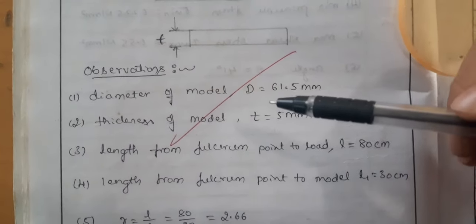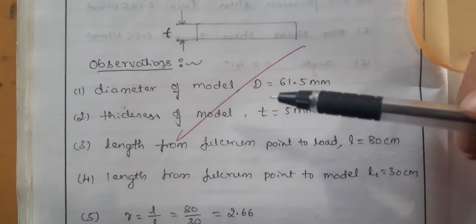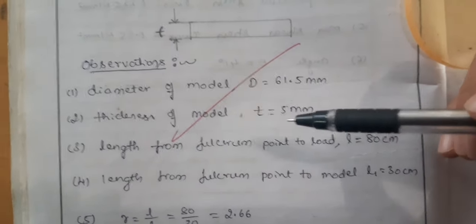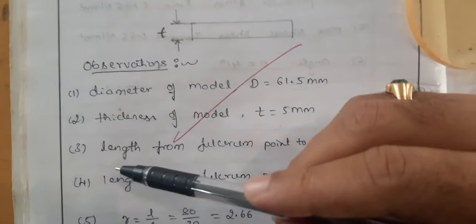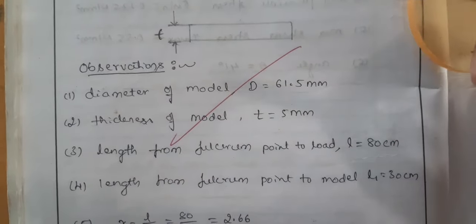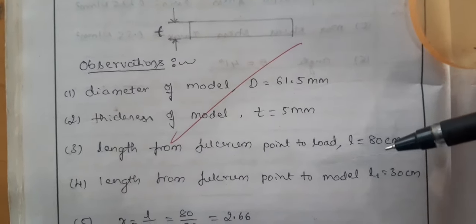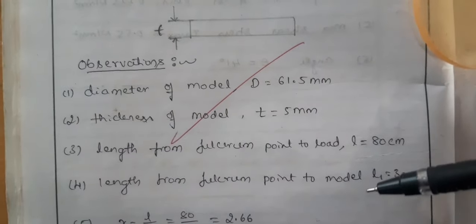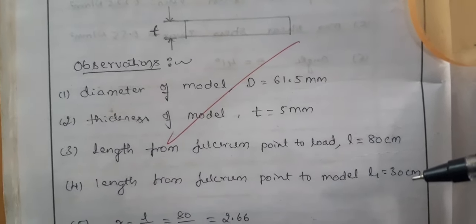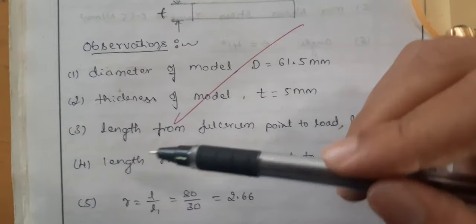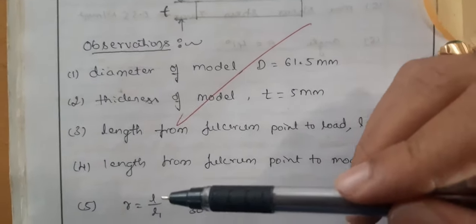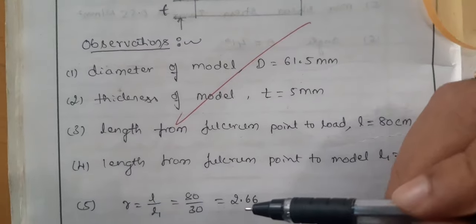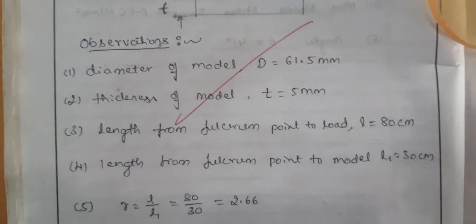The diameter of the model or specimen is d, and the thickness of the specimen or model is t, both in millimeters. You also have to note down the length from the fulcrum point to the load, which is l in centimeters, and the length from the fulcrum point to the specimen, which is l1 in centimeters. The ratio r equals l divided by l1, and this value will be used later for finding the fringe constant.